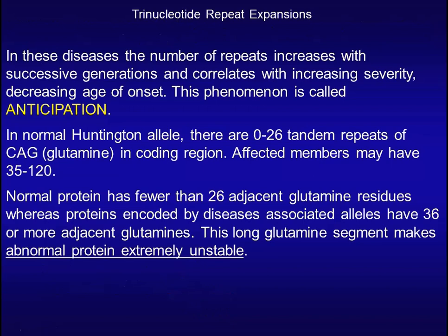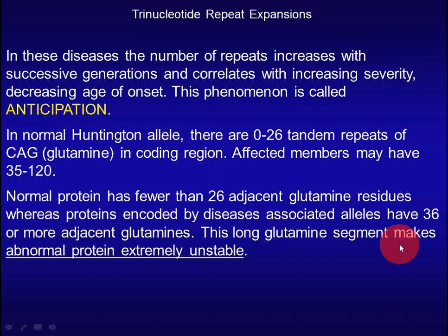This is a very important concept. For example, in a normal Huntington allele there are fewer than 26 tandem repeats of CAG in the coding region, while affected members may have between 35 and 120 repeats. Normal proteins have fewer than 26 adjacent glutamine residues, while proteins from disease alleles have 36 or more adjacent glutamine residues. This long glutamine segment makes the abnormal protein very unstable.